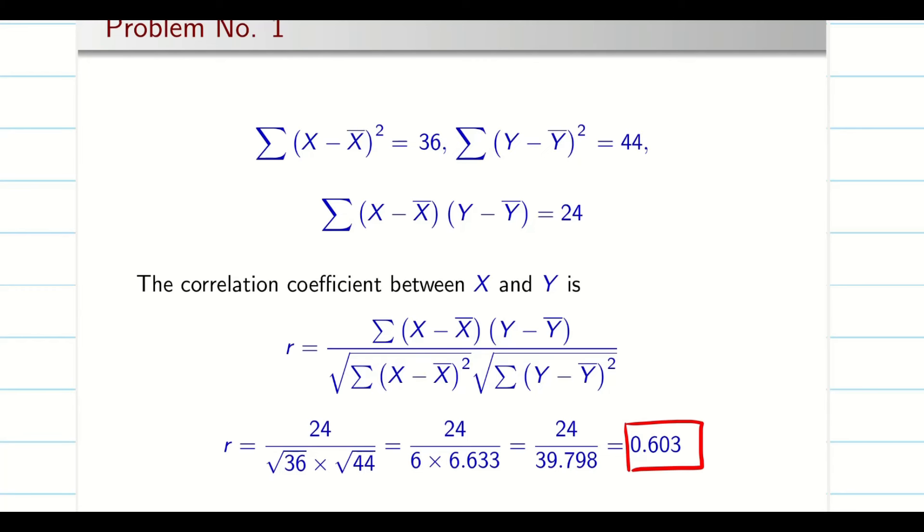Just find x, y, x square, y square, xy. And use the correlation coefficient formula. Substitute the values. Get the solution.